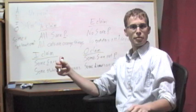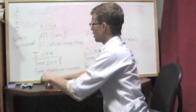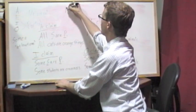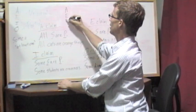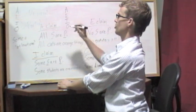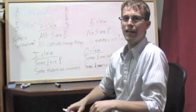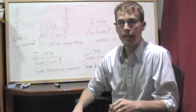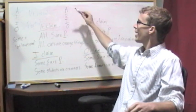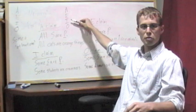Now this will be kind of intuitive. So let's write out again, A, E, I, and O. Now, A claims, it's the first kind, and I claims, the third kind, are both positive.